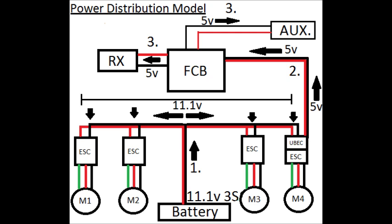UBECs are not optional. Connecting your battery straight to your flight control board or other auxiliary equipment will probably overload it and destroy it. Number two represents 5 volts from the UBEC to the flight control board. Once the 5 volts reaches the flight control board, through the various other ports on it, the receiver and the auxiliary equipment, such as a GPS, will be powered in turn. If there's anything I left out on this power distribution model, please leave a comment below or email me.